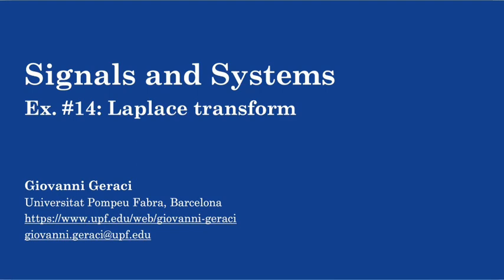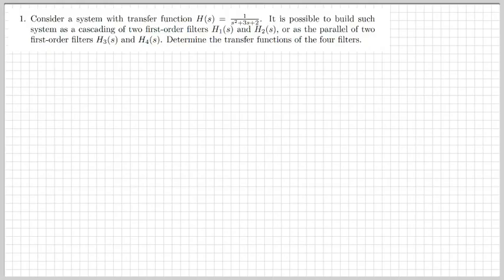Let's get started with today's exercises. The first exercise gives us a transfer function H(s) of a certain signal, and it says that it's possible to build such a system as the cascade of two first-order filters, or as the parallel of two first-order filters. So we should determine the transfer functions of these four filters in the two cases.